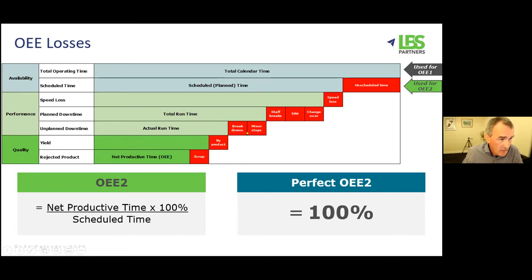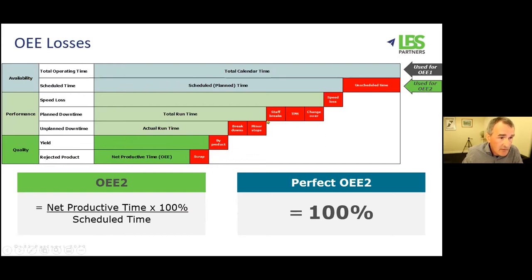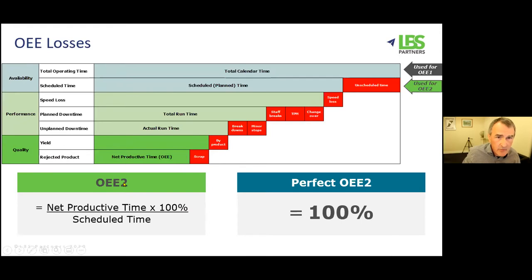There are other things that eat into OEE. On the quality side, we might have a yield loss — some byproduct taken out — and we also have rejected product, our scrap losses. When you take all of those losses out, you're left with net productive time — when we're actually making good product. I'm talking now about OEE 2, so let's just touch on that briefly.